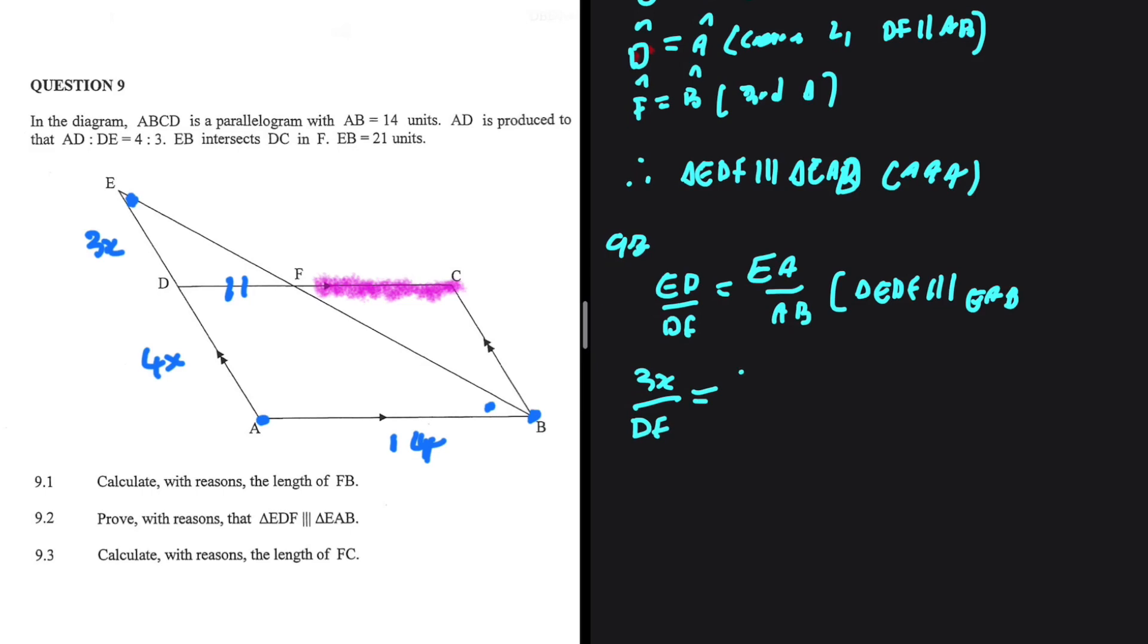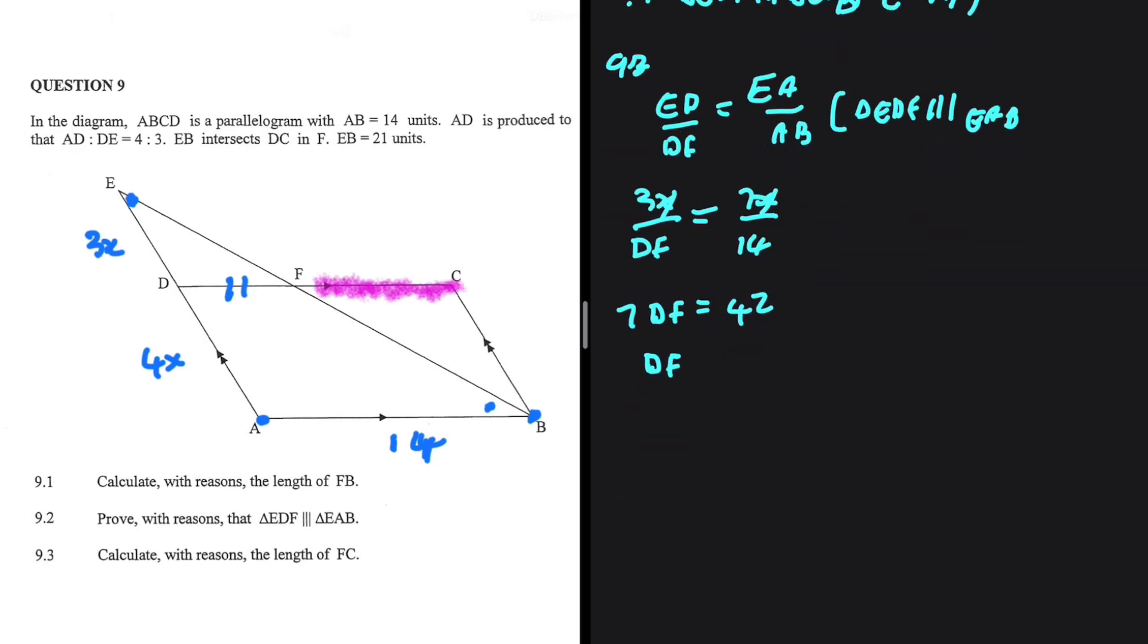This is equal to EA, which is 7X. AB is 14. X and X can cancel out. If we cross multiply, we have 14 multiplied by 3, which is 42. So 7DF is equal to 42. 42 divided by 7 is 6. So DF is equal to 6.